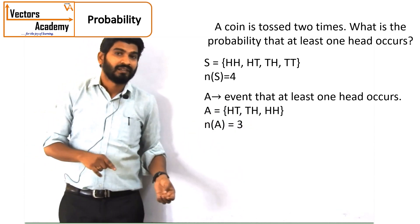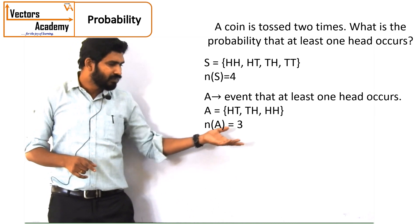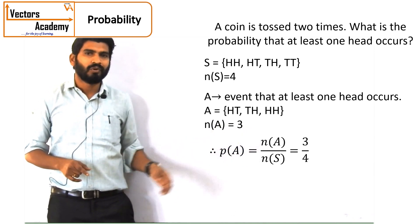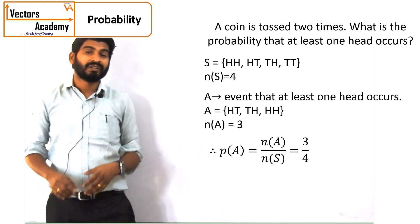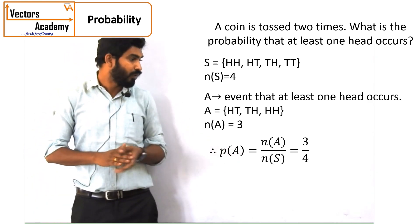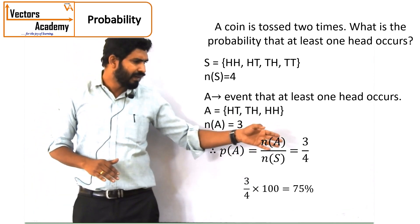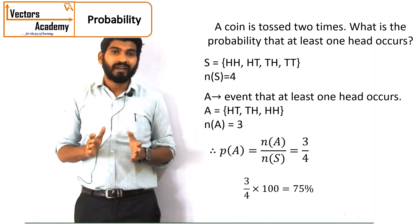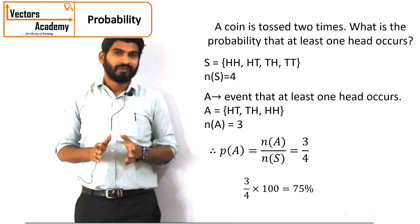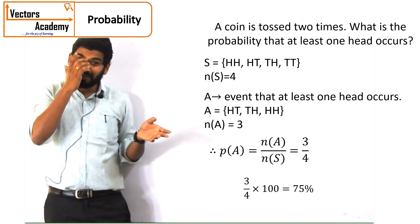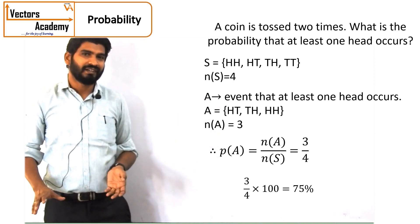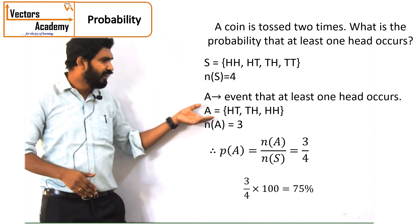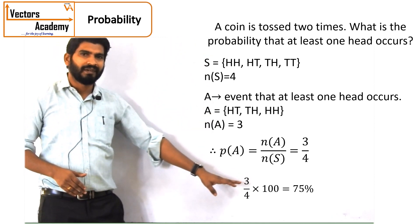We write this event as A and say that N of A equals 3. The probability is given by the formula N of A upon N of S, that is 3 upon 4. So 3 by 4 — there is a 3/4 chance. If we convert it into percentage by multiplying by 100, there is a 75 percent chance that at least one head occurs. This is how a simple probability is calculated. The sample space, the event, and finally the probability.